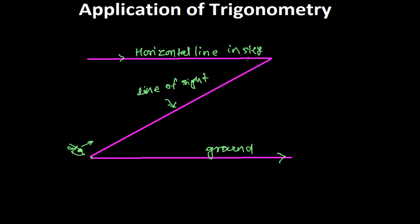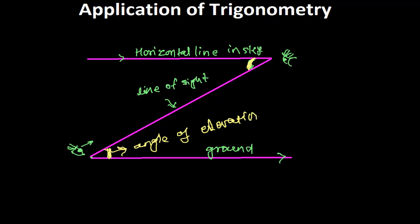Sometimes depending on the situation we may be watching from above or below. The angle formed between the line of sight and the horizontal when we look upward is called the angle of elevation, and when we look downward it is called the angle of depression.